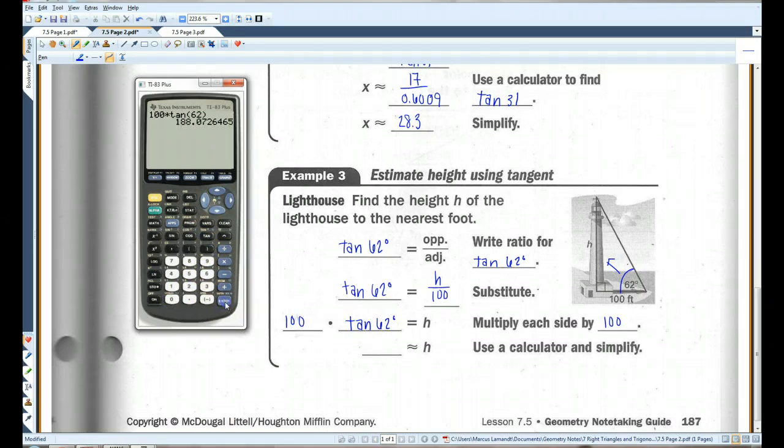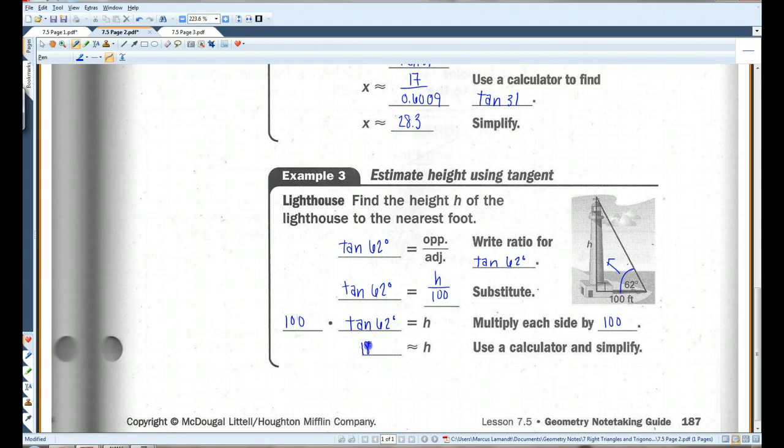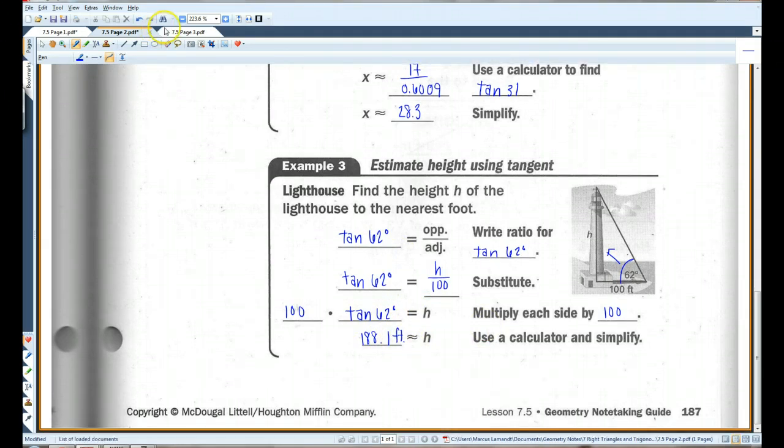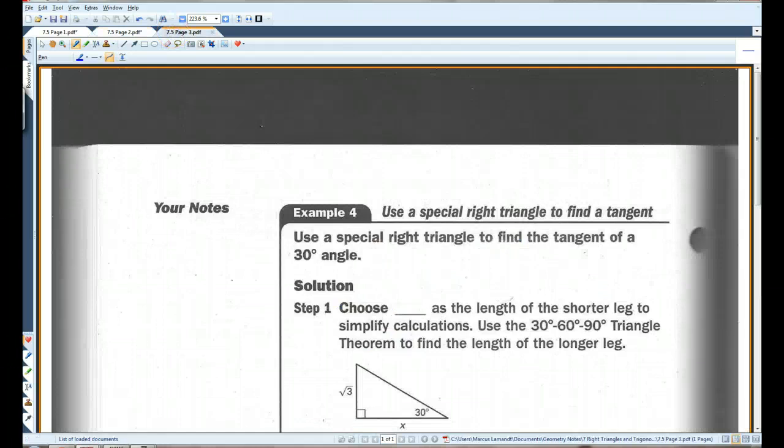So, 100 times tangent of 62 degrees, 188.07. I'll say 188.1. Oops. Not a degree. Sorry. There we go. And this would be in feet. Okay. Let's go on to page 3.